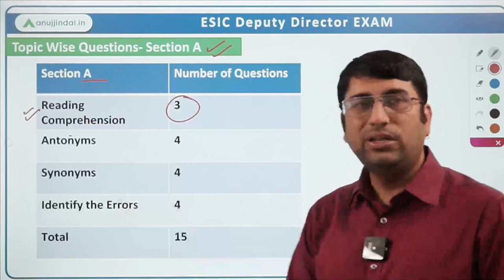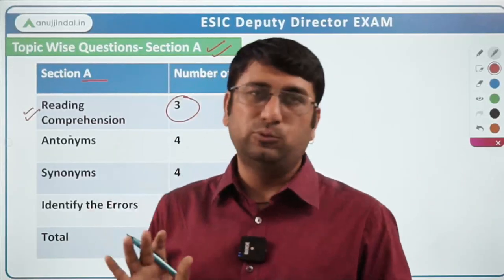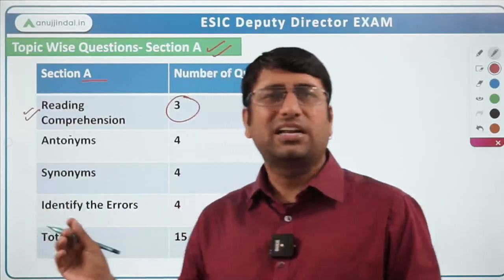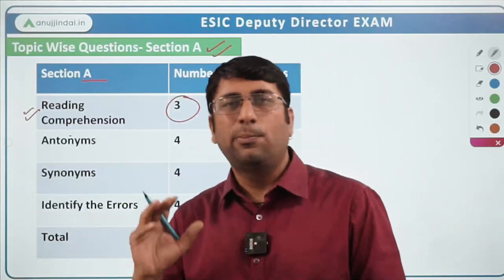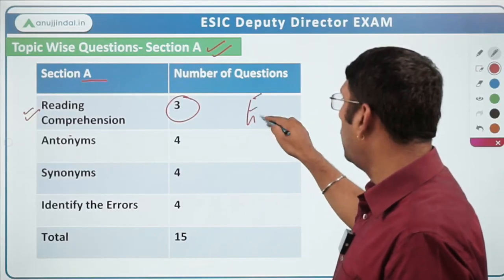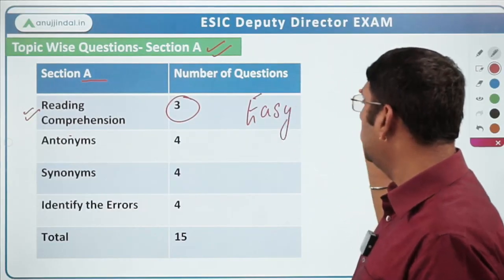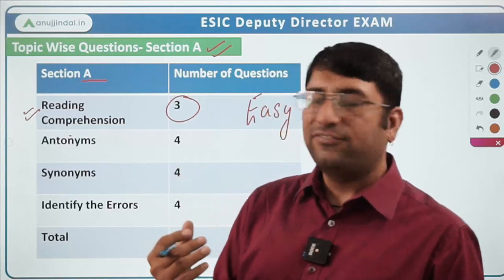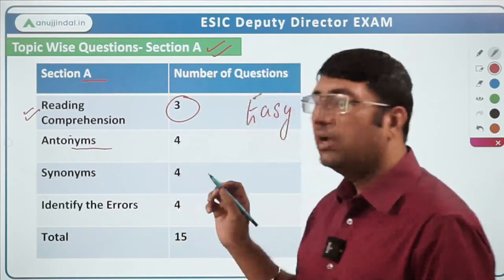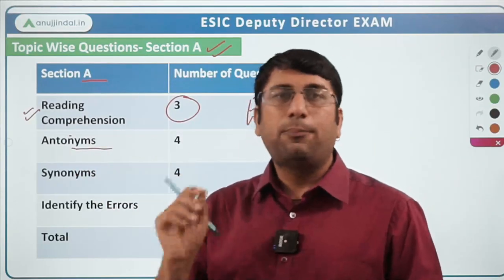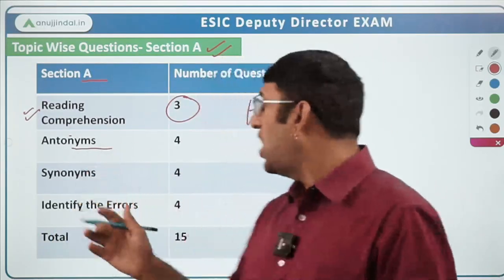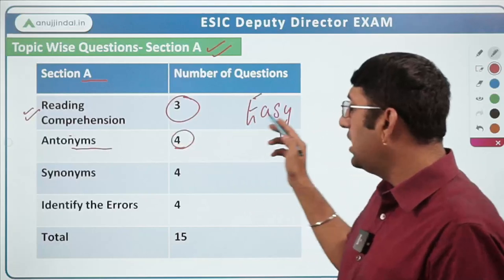A reading comprehension passage is given — not a very lengthy one, around 200–300 words — with three questions on it. For this, if you practice 2–5 mock reading comprehensions, that will be more than sufficient. The level was very easy since it's not lengthy. Second topic in the English section was antonyms — opposites, for example 'easy' opposite is 'difficult' — and 4 questions were asked from this, again very easy.